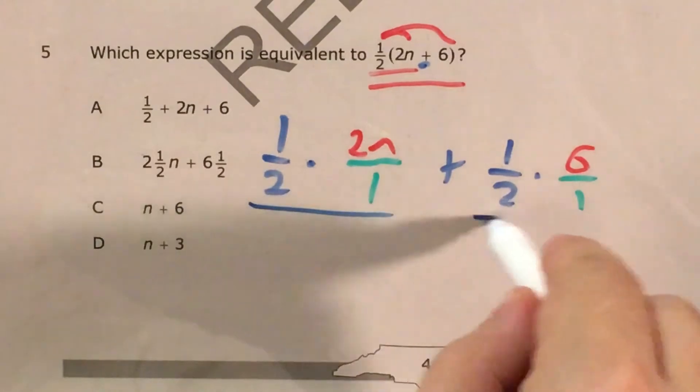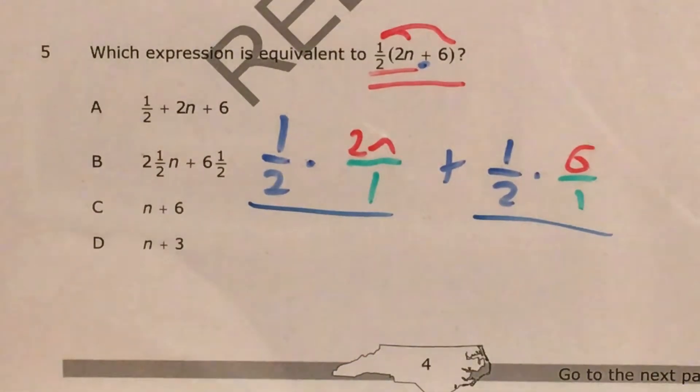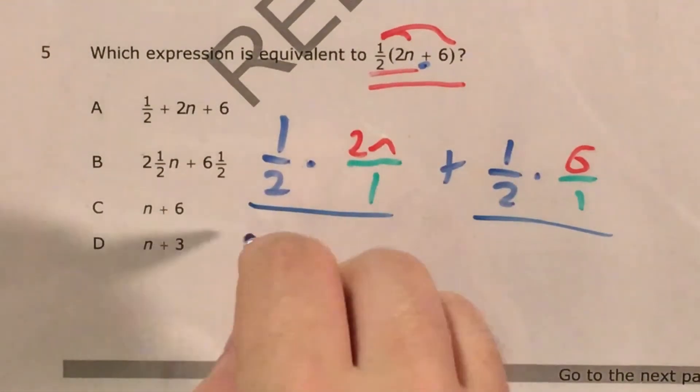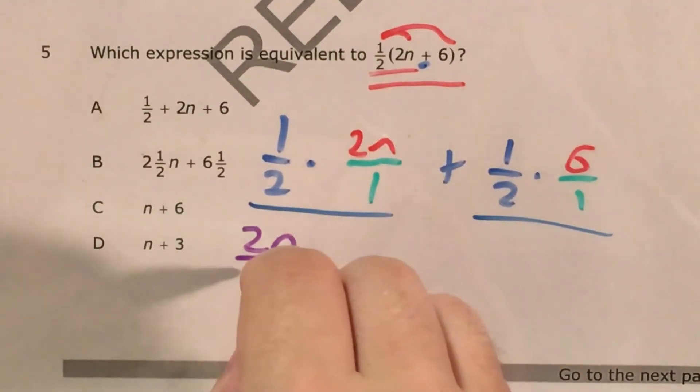And now, I have 1, 2 multiplying fractions problems that I can just go ahead and do by multiplying across my numerators and denominators. For this one, I start with 1 times 2n, multiply across my numerators, and I get just 2n. Multiply across my denominators, and I get 2.